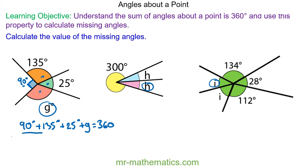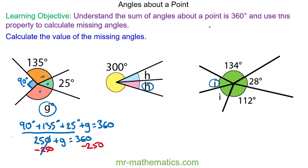We can add these together and we get 250 plus angle g is equal to 360. We can take away the 250 from both sides, so we're left with angle g is equal to 110 degrees.